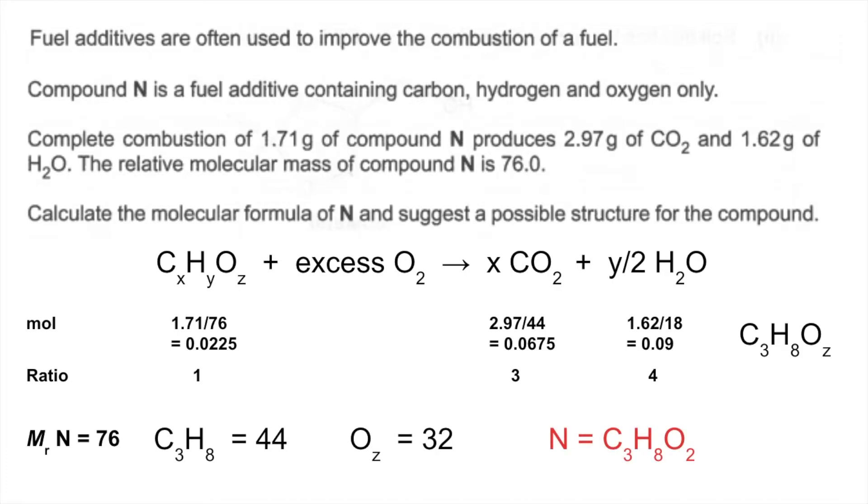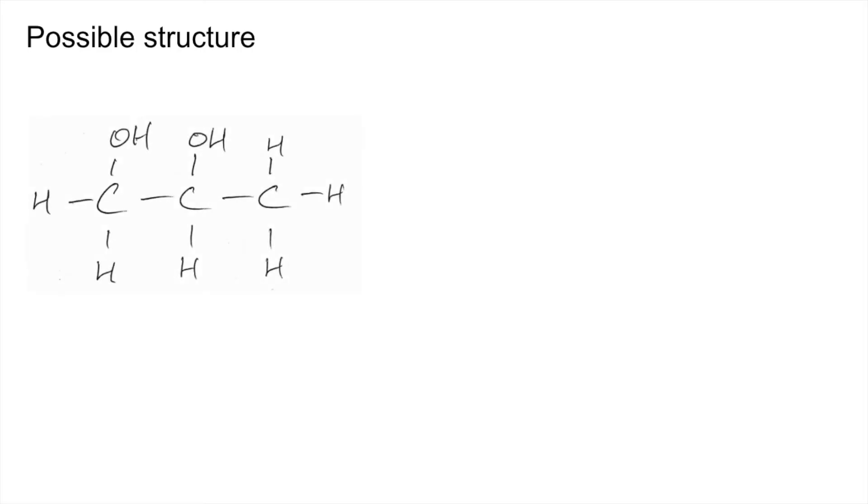So N has the molecular formula C3H8O2. And then from that, we've got to come up with a possible structure for the additive. So I've come up with that. You could also obviously have the 1,1 isomer, or the 1,3, or the 2,2. So in other words, the OH groups here, or here, or here.